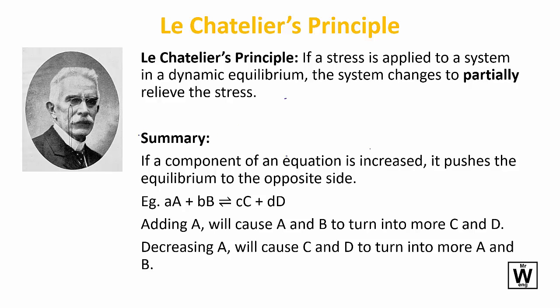If you increase one side — say, increase A — that causes stress because it's now out of proportion. These components will try to raise the levels of C and D by pushing the reaction to the right-hand side. So adding A will cause A and B to turn into more C and D. Vice versa is also true: if you decrease A, then C and D will start turning into more A and B to make up for the drop in A.